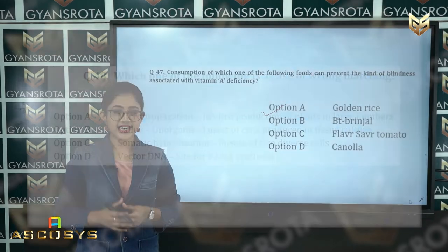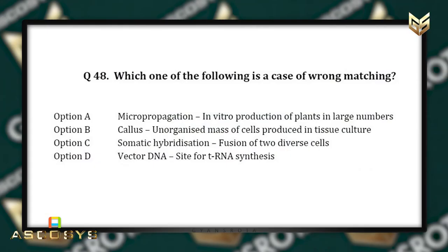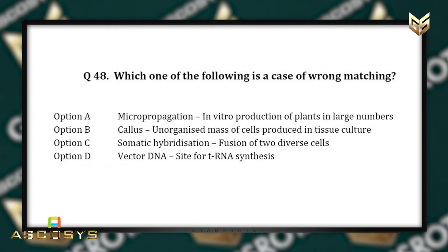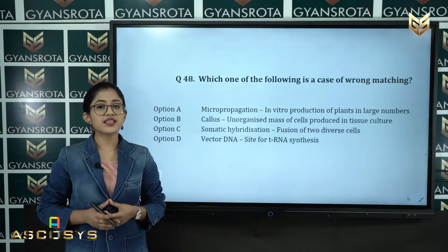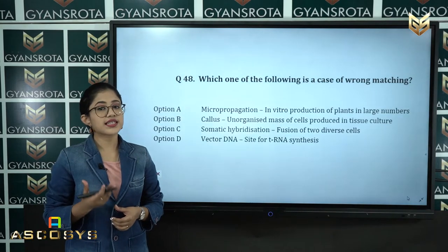Question 48: Which one of the following is a case of wrong matching? Option A: Micropropagation – in vitro production of plants in large numbers. Option B: Callus – unorganized mass of cells produced in tissue culture. Option C: Somatic hybridization – fusion of two diverse cells. Option D: Vector DNA – site for tRNA synthesis. This is from the unit Biotechnology.